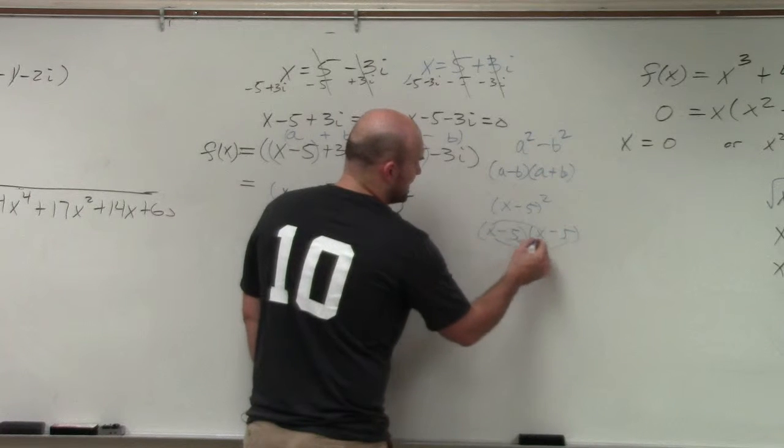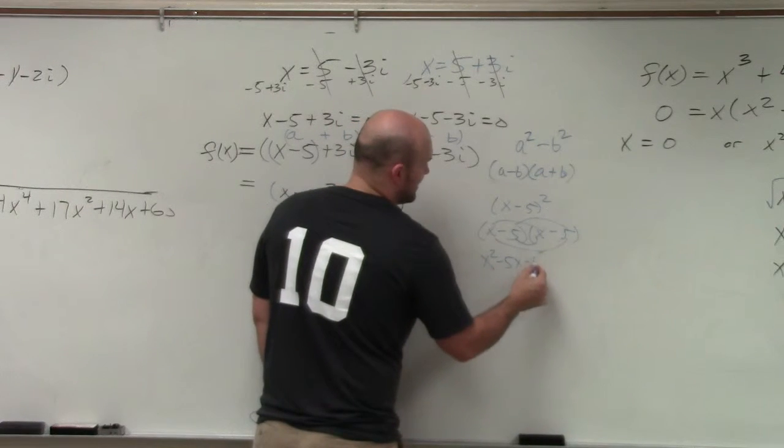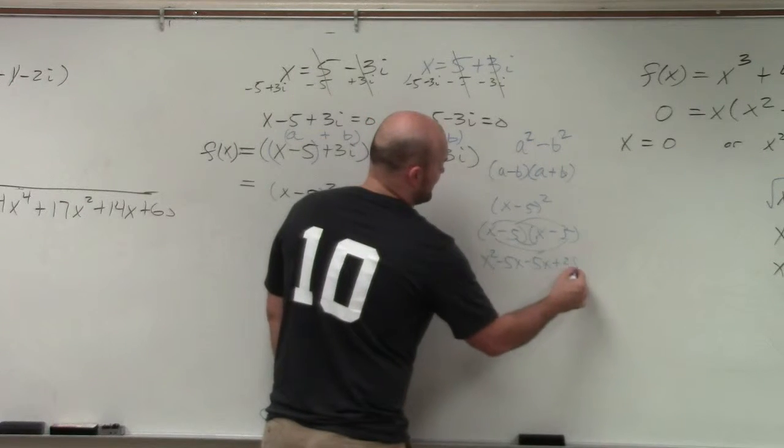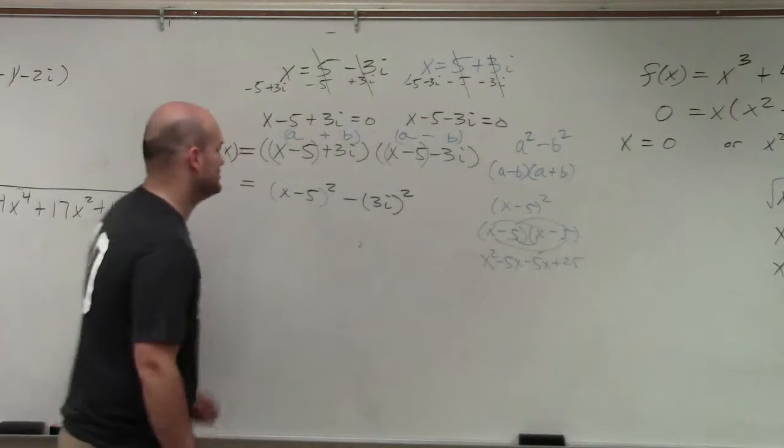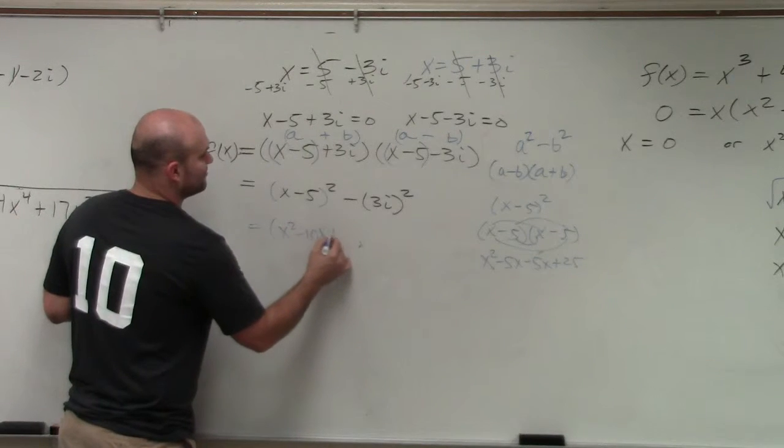First, outer, inner, last. x squared minus 5x minus 5x plus 25. You combine your middle terms. What you get is x squared minus 10x plus 25.